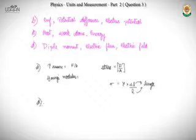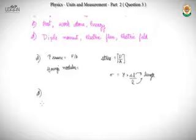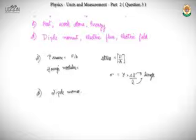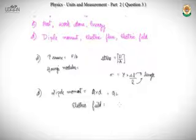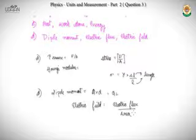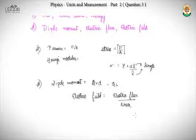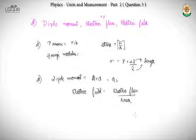Checking option D: dipole moment = charge × distance = qL. Electric field is electric flux per unit area. Since area is L² — which is not dimensionless — electric field and electric flux cannot have the same dimensions. So the set in option D does have different dimensions. We don't even need to check dipole moment; these two differ already.